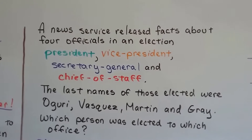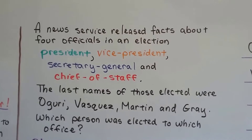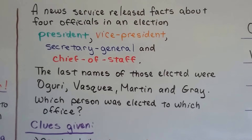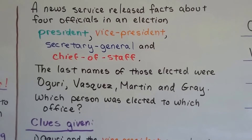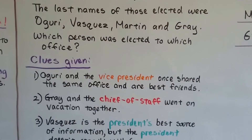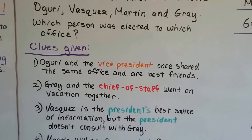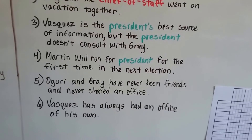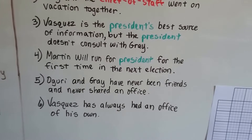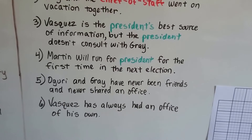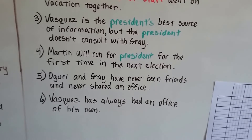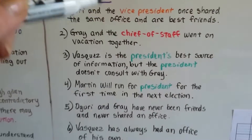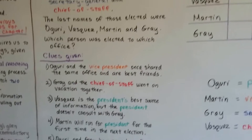We've got a news service that released facts about four officials in an election: President, Vice President, Secretary General, and Chief of Staff. The last names of those elected were Oguri, Vasquez, Martin, and Gray. Which person was elected to which office? We have some clues to figure this out. Clue 1: Oguri and the Vice President once shared the same office and are best friends. Clue 2: Gray and the Chief of Staff went on vacation together. Clue 3: Vasquez is the President's best source of information, but the President never consults with Gray. Clue 4: Martin will run for President for the first time in the next election. Clue 5: Oguri and Gray have never been friends and never shared an office. Clue 6: Vasquez has always had an office of his own. From these clues, we're going to figure out who is in what office by using a table.